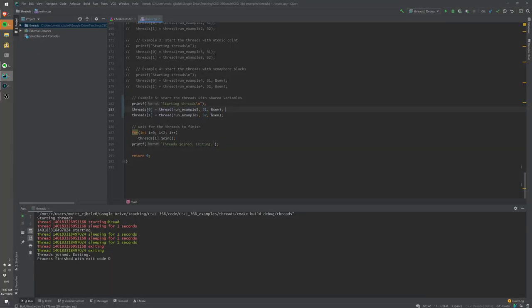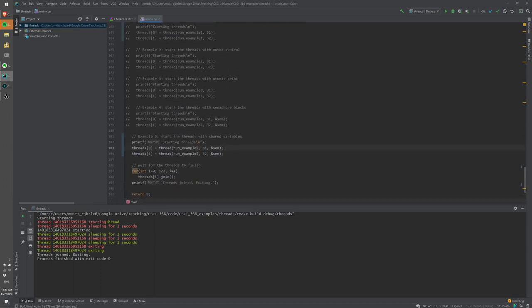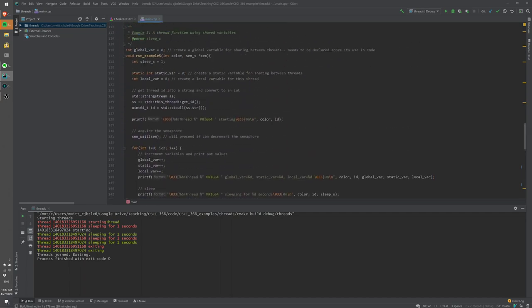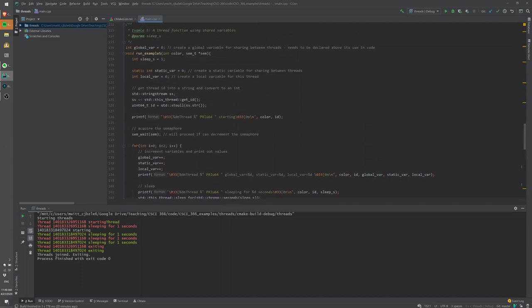This is in CSCI 366 examples. It's a thread example and what we'll do here in main is run example 5 and example 5 is defined up here. Now, what's different about this example is that we set up three types of variables. We have a global variable. We have a static variable and we have a local variable. The global variable has to be defined outside of any function scope but also above when we use it. So, here in the for loop, we increment the global variable. If you declare this global variable, say, above main, this function wouldn't have access to it. So, we need to declare it above where we use it.